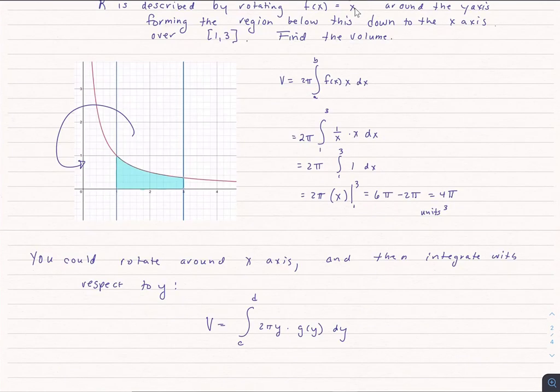We could also rotate this around the x-axis and then integrate with respect to y. We would use something very similar to the disk and shell method. But again, with the disk and shell, if we spun it around the y, we integrate with respect to y. If we spun it around the x, we integrate with respect to x. This is the opposite. If we rotate around x, we integrate with y. If we rotate around y, we integrate dx.